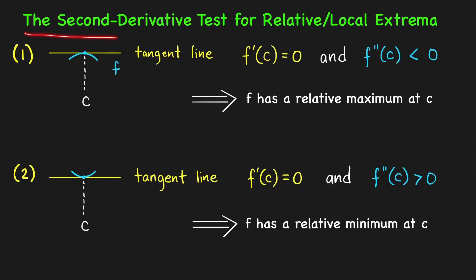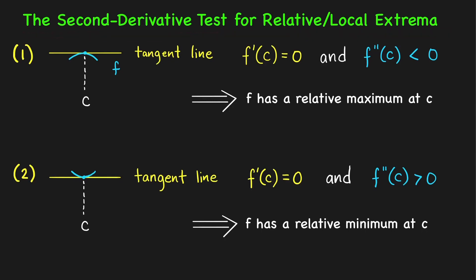Here's the second derivative test for relative or local extrema. Before we discuss these two cases, recall that the only candidates that could give us a relative minimum or relative maximum are the critical numbers of f. These are the elements of your domain where the derivative is 0 or does not exist.